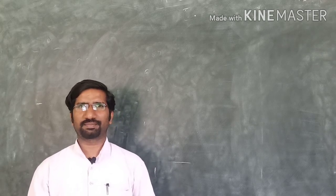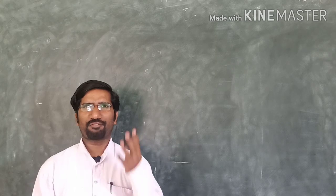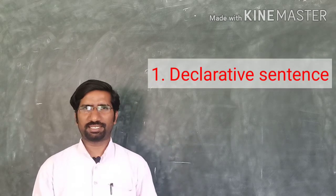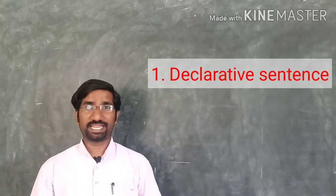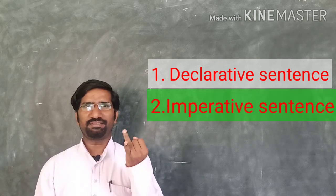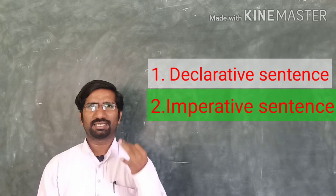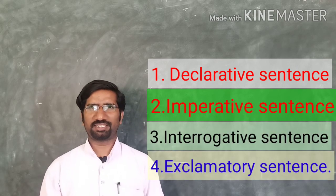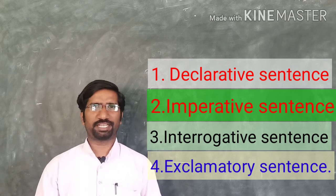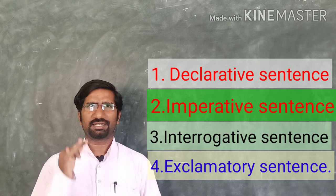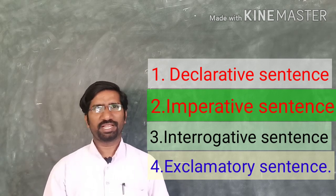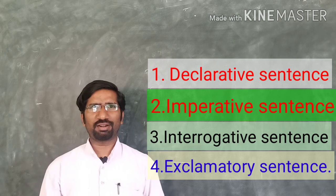There are four kinds of sentences. The first one is the declarative sentence, also called the assertive sentence. The second one is the imperative sentence. The third one is the interrogative sentence. And the fourth one is the exclamatory sentence. There are four kinds of sentences in English.